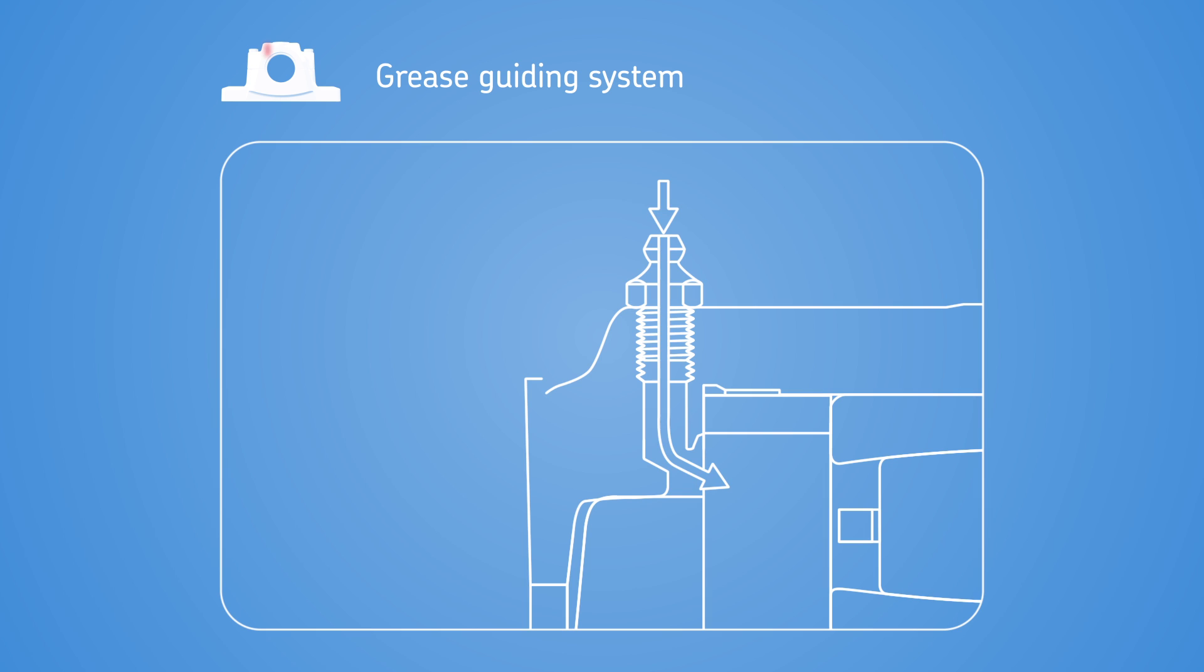For more efficient lubrication, SE housings have an integrated flange that guides grease from the grease fitting directly to the bearing. To prevent overfilling, markings inside the base indicate proper grease levels for an initial 20 or 40 percent fill.